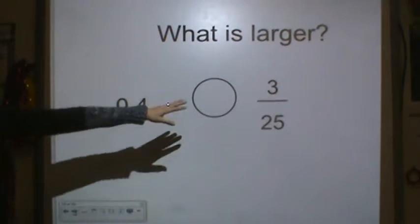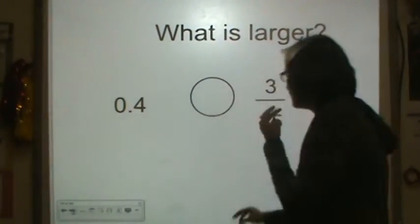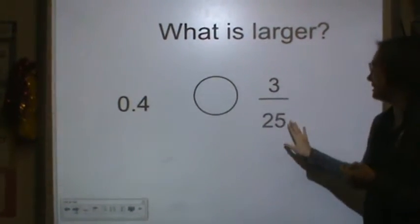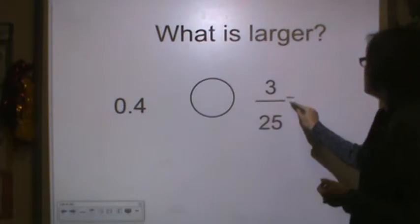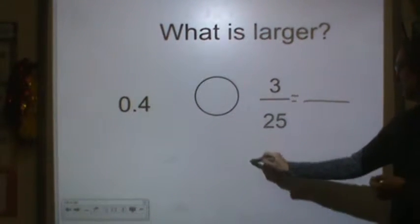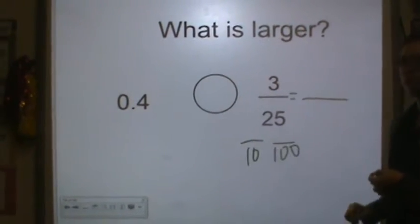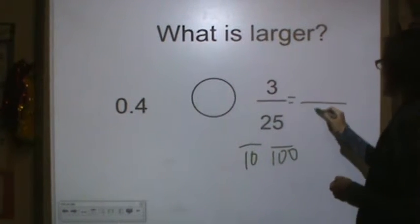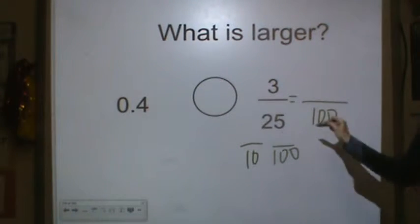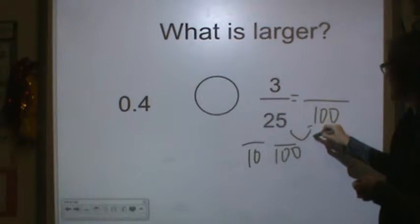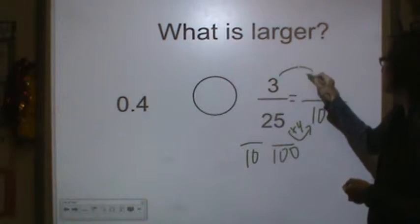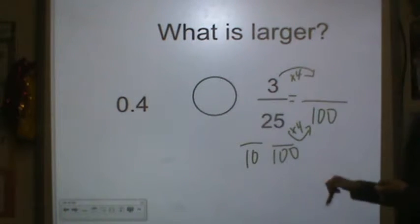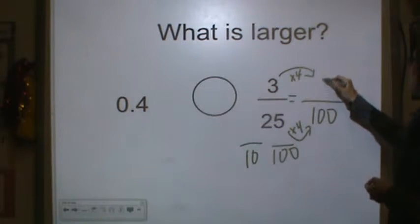Okay, now this one's a little bit tricky because I cannot convert this fraction the way it is into a decimal. I have to make an equivalent fraction because I need a 10 or a 100 in the denominator to write this as a decimal. So I know I can go from 25 to 100 really easily. I just think quarters. So 4 quarters in a dollar and a dollar is 100 cents.